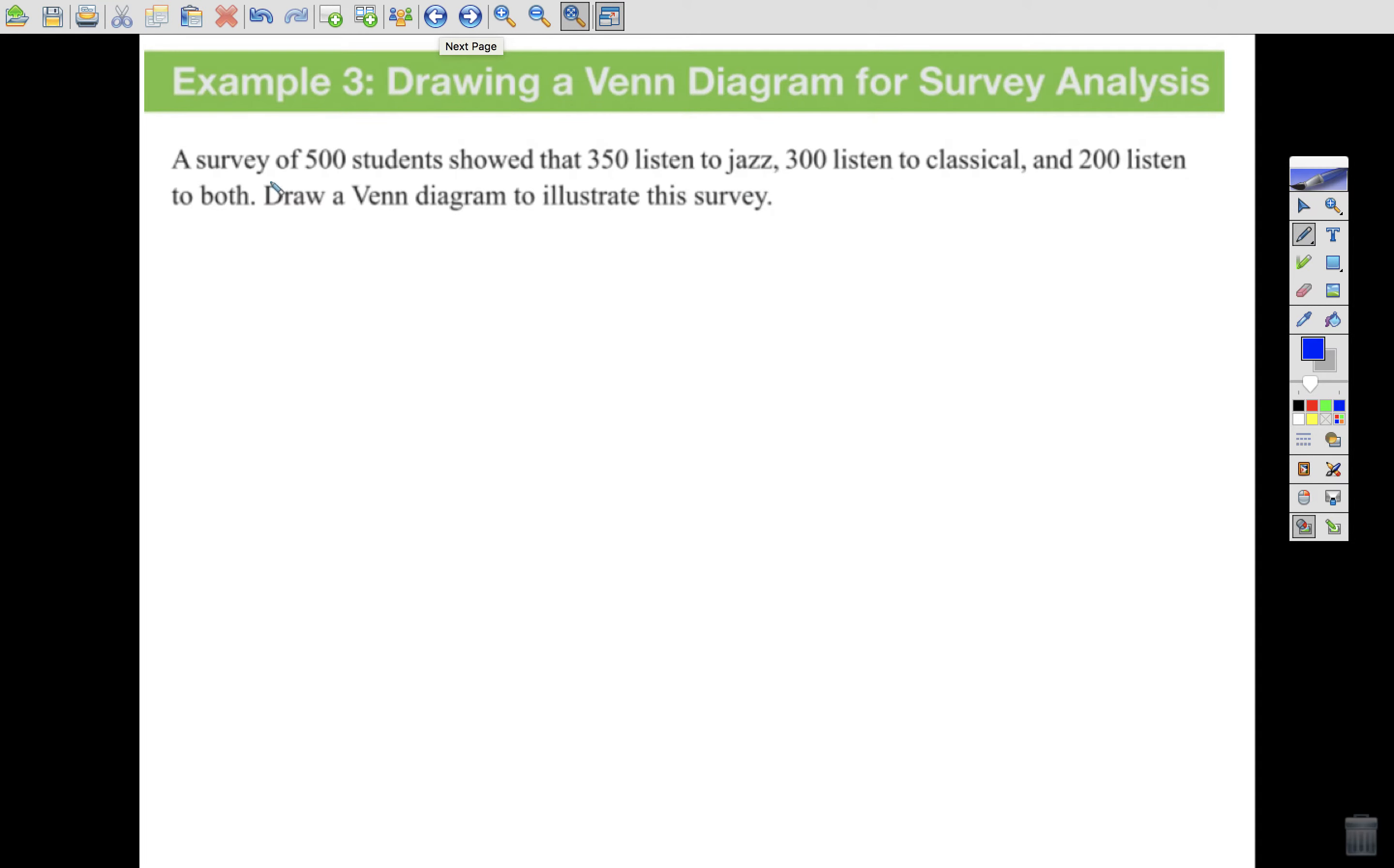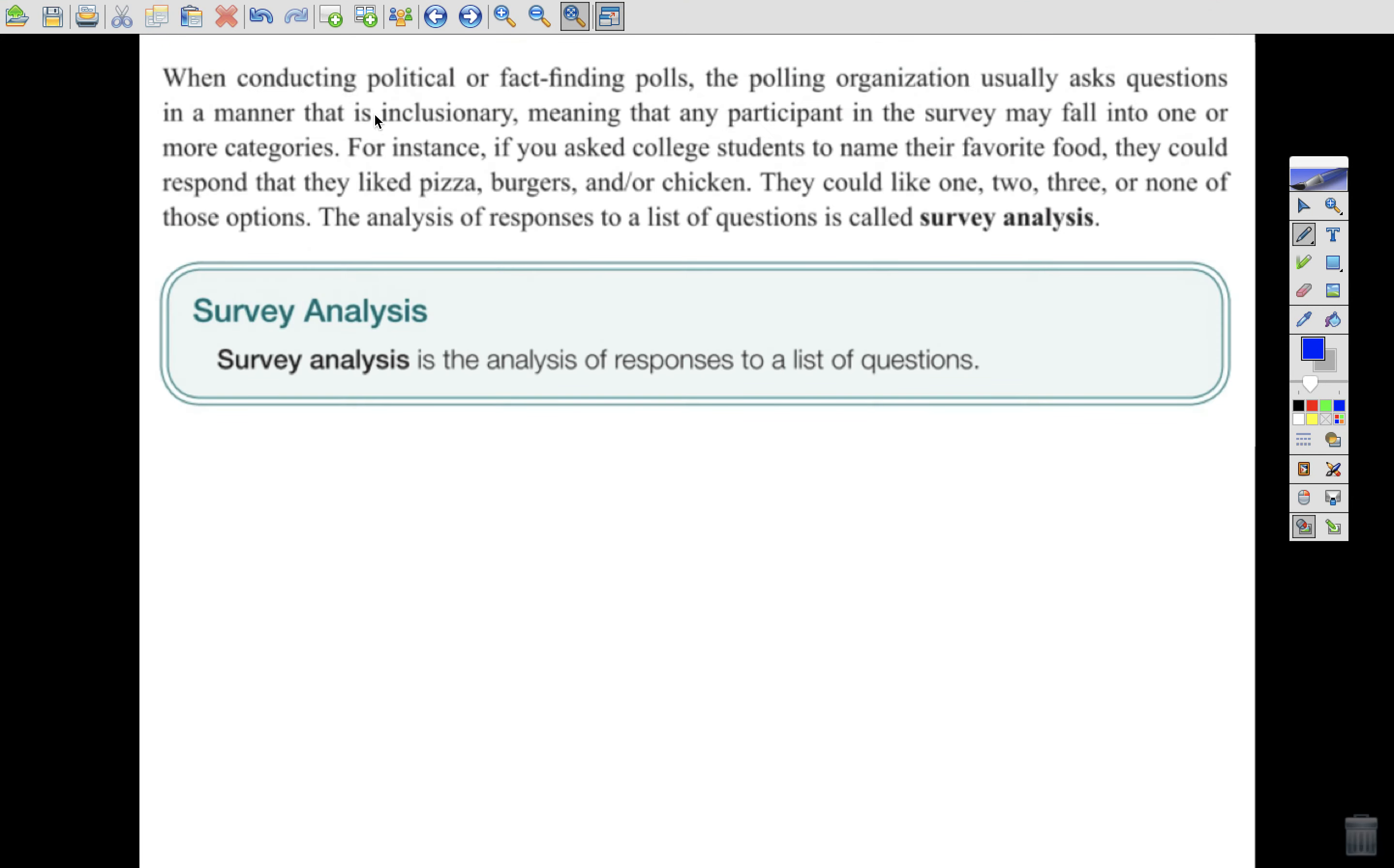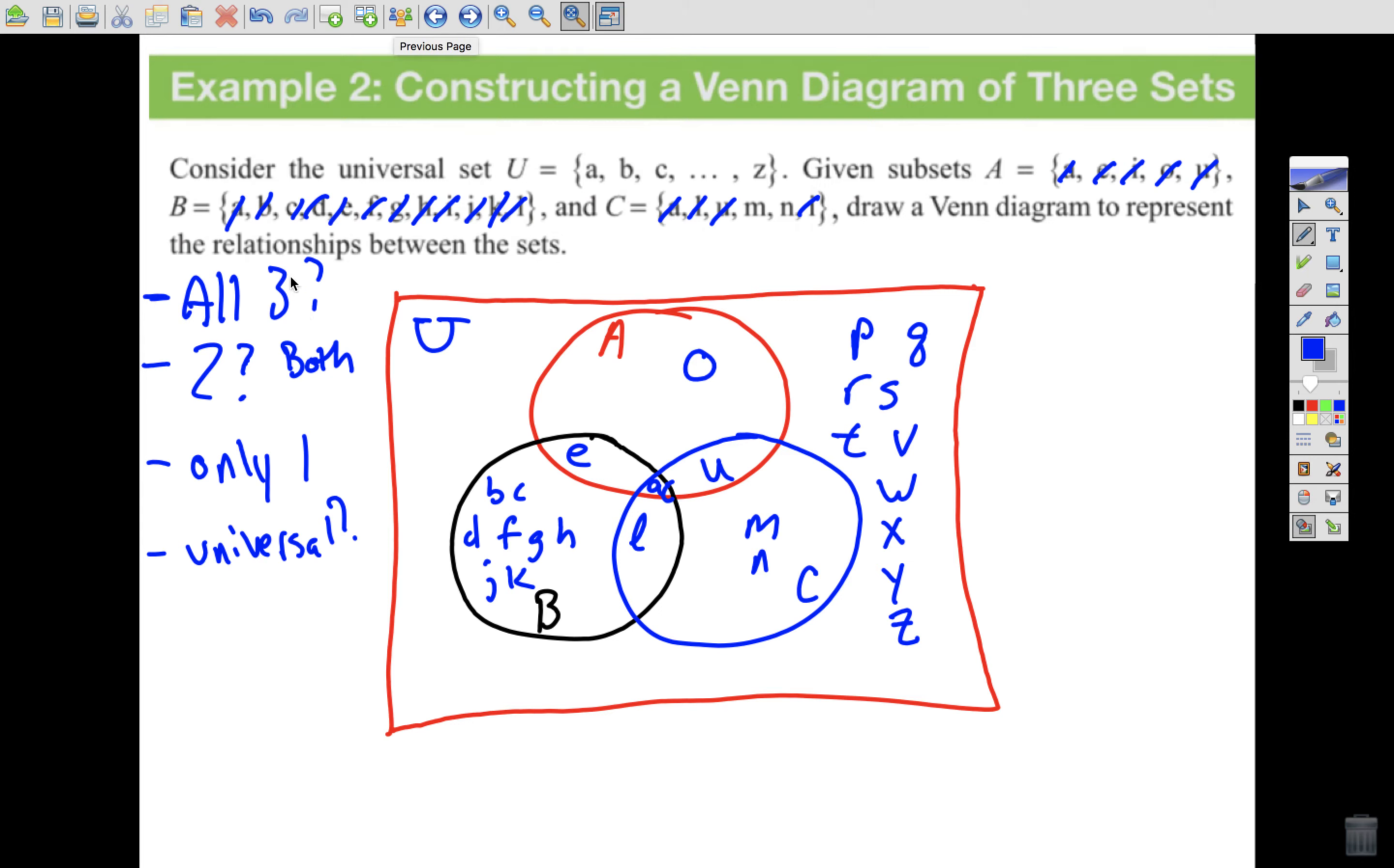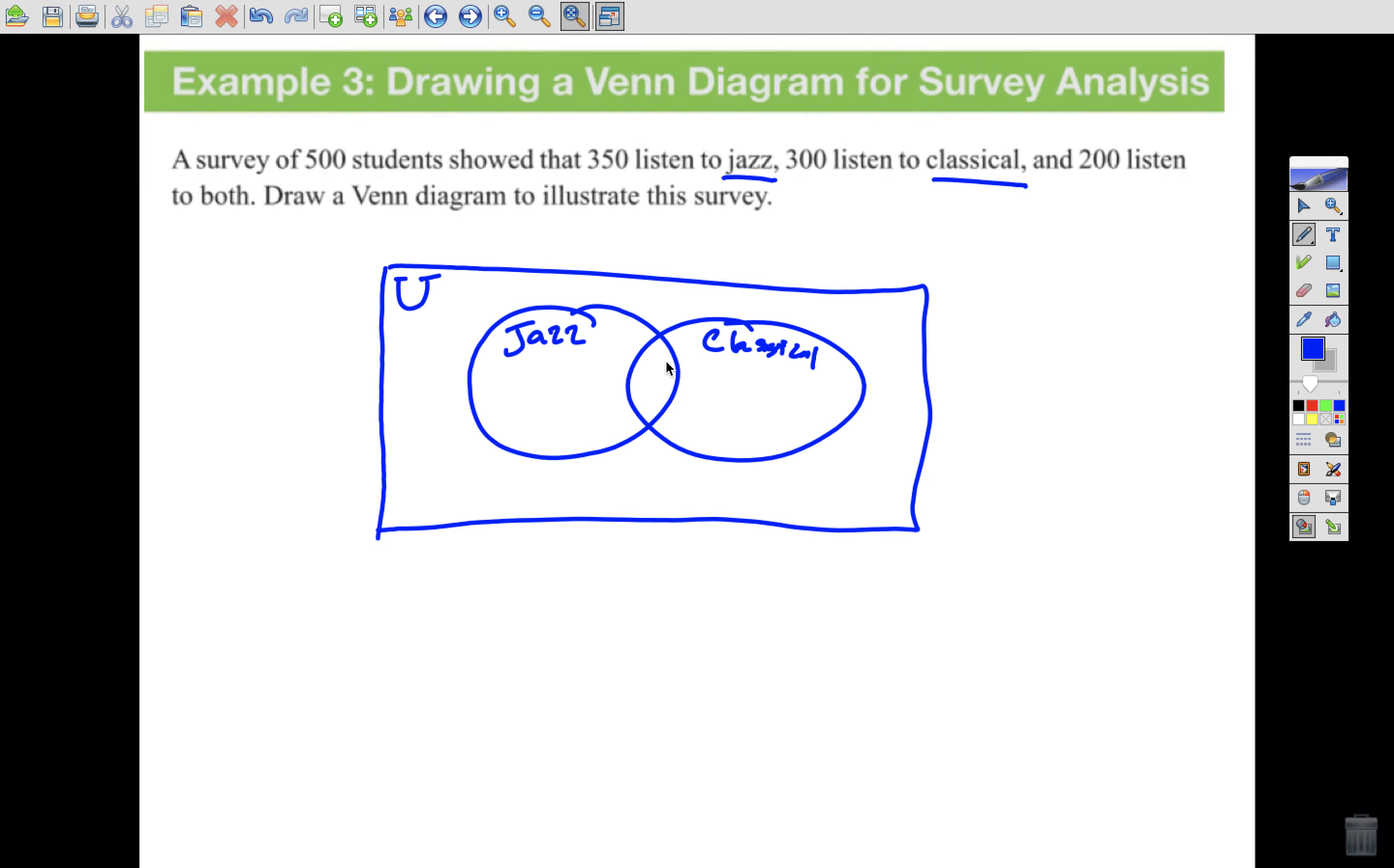It looks very much like what we've been doing. A survey of 500 students showed that 350 listened to jazz, 300 listened to classical, and 200 listened to both. Draw a Venn diagram to illustrate this survey. So I'm going to draw a Venn diagram. I'm going to make my big rectangle. I'm going to make my universal set. And then I'm going to... How many circles do I need? Well, I need a jazz circle, and I need a classical circle. So I'm going to have a jazz, and I'm going to have a classical. I don't need a third one. There's no third option. Okay? Again, going from what I talked about on the previous slide, where we work from our innermost out, all three. We had three circles, so we go for our innermost overlap. We work our way out. Here we have two circles, so how many are in the overlap?